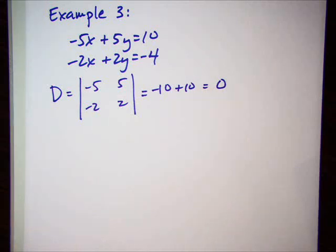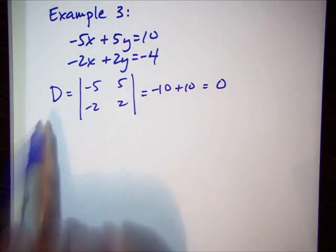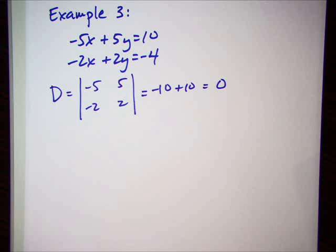Here's what happens. Whenever the d determinant is 0, one of two things will happen. It will either be an infinitely many solutions, or it will be no solutions.